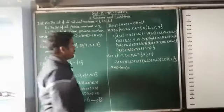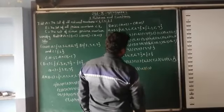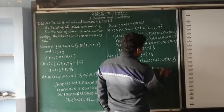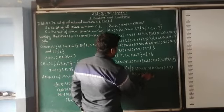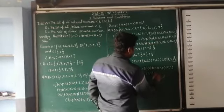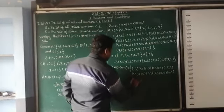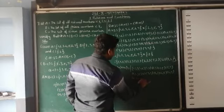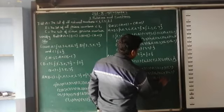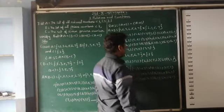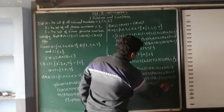Therefore, A×B − A×C = {(1,3),(1,5),(1,7), (2,3),(2,5),(2,7), (3,3),(3,5),(3,7), (4,3),(4,5),(4,7), (5,3),(5,5),(5,7), (6,3),(6,5),(6,7), (7,3),(7,5),(7,7)}. This is equation 2.